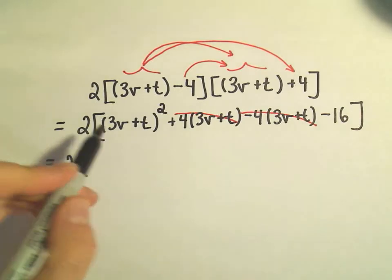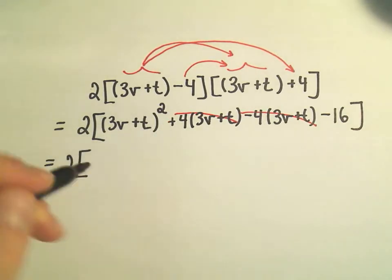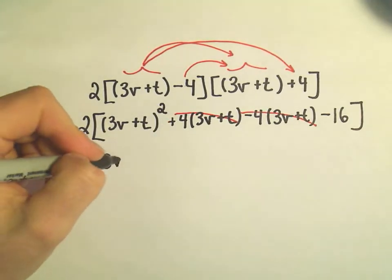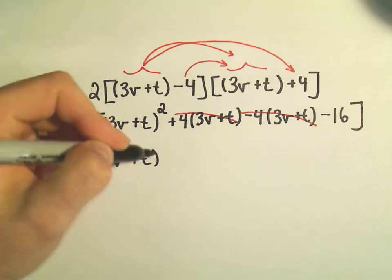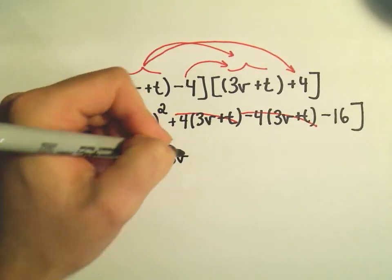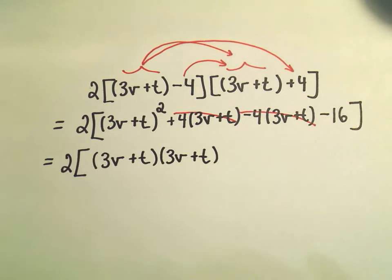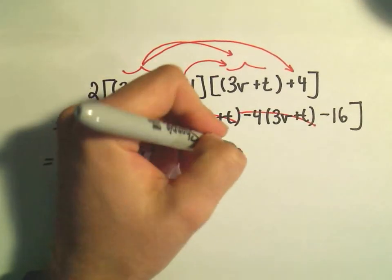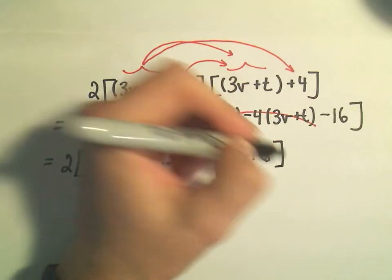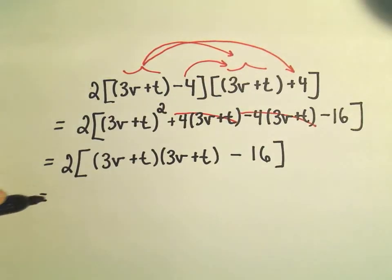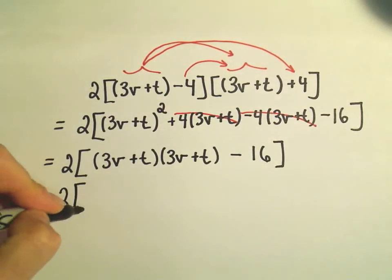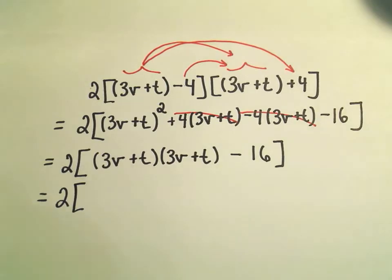Then since we're trying to expand this out, since we have 3v plus t squared, I'm going to write that as 3v plus t times 3v plus t. We could have done that originally instead of writing with the square. We still have our minus 16 left over. I'm just going to keep simplifying inside the brackets. So it looks like we have to foil one more time.